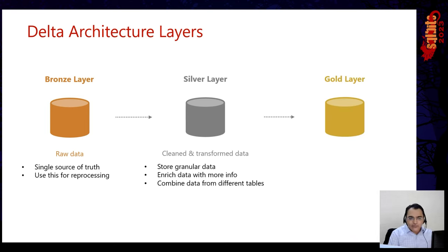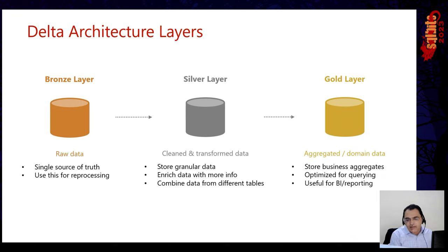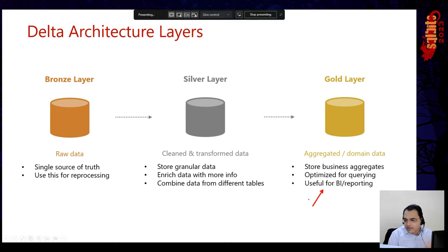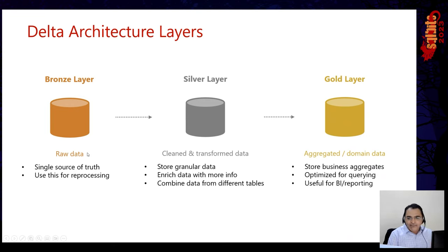Then we have the gold layer, which is focused on domain-specific data — for example, data for the marketing domain, sales domain, or other departments. Think of this like folders in a data lake: one folder for bronze, one for silver, one for gold with subfolders per domain. The gold layer is used for BI and reporting. Silver is used by data scientists for cleaned granular data. The raw bronze layer is used by data engineers to reprocess as needed.